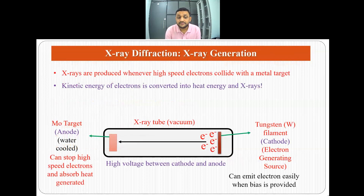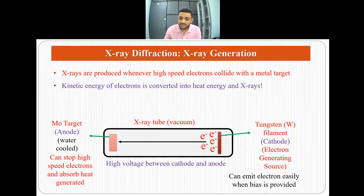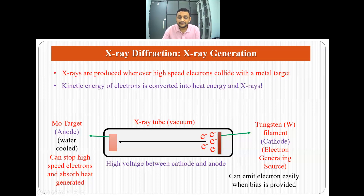X-rays are generated when high-speed electrons collide with a metal target, and when these high-speed electrons collide with a metal target their kinetic energy is converted into heat energy and X-rays.